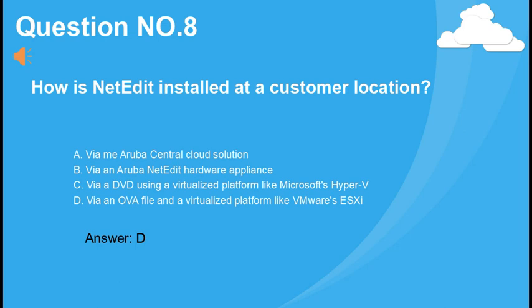How is NetEdit installed at a customer location? A. Via the Aruba Central Cloud Solution. B. Via an Aruba NetEdit Hardware Appliance. C. Via a DVD using a virtualized platform like Microsoft's Hyper-V. D. Via an OVA file and a virtualized platform like VMware's ESXi. Answer: D.